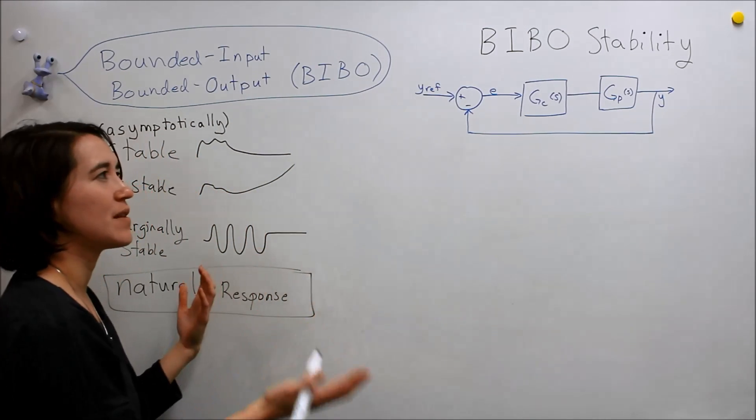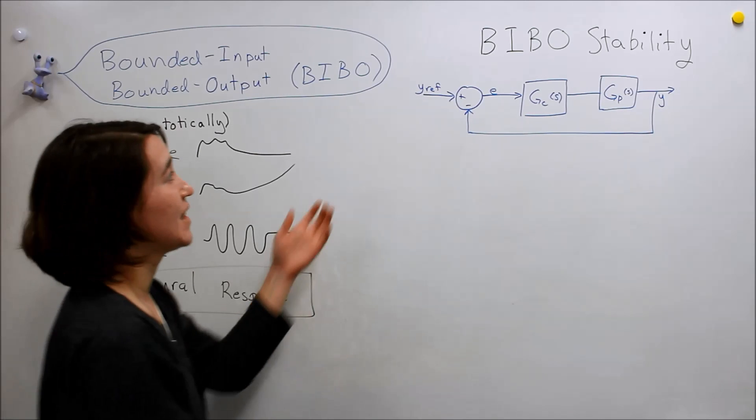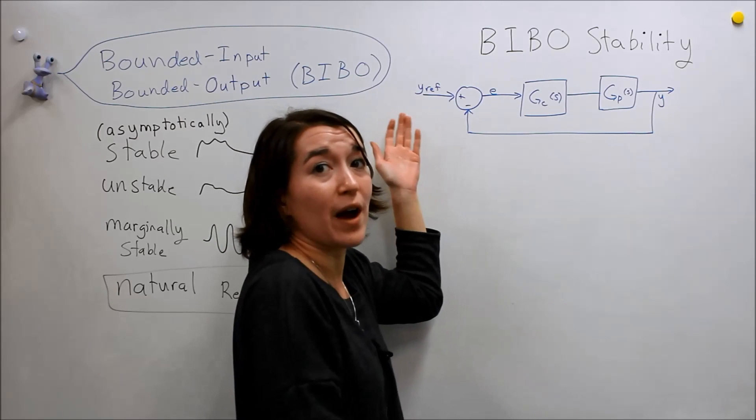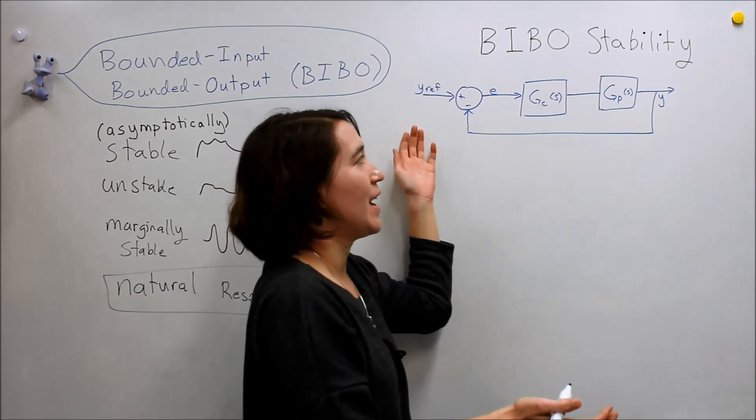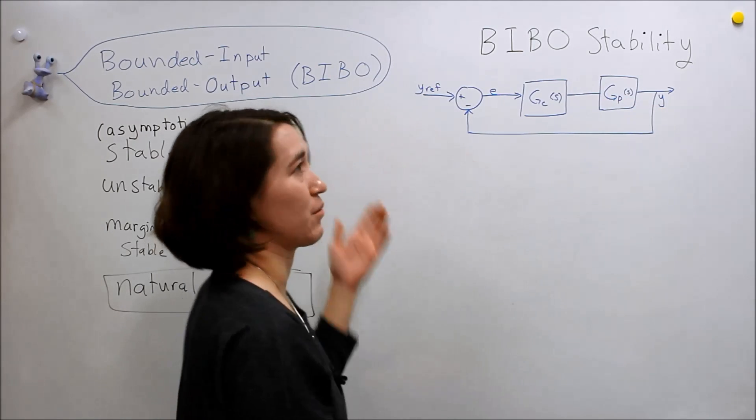So our system can still be stable, even if it doesn't go to zero necessarily. And if you think about it, in our system, our input is going to be some V ref—or sorry, Y ref—and our output, we don't want it necessarily to go to zero. We want it to follow this reference.